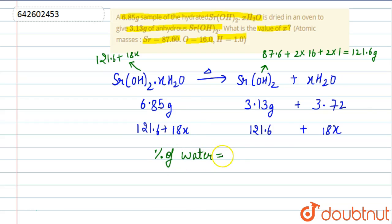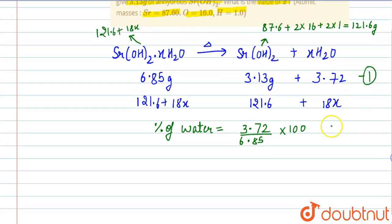The percentage of water from the given data is 3.72 over 6.85 into 100. This was equation number one.